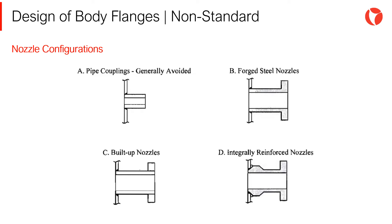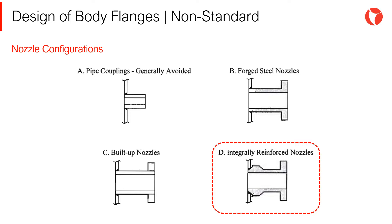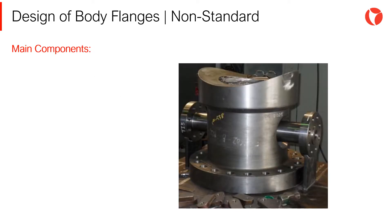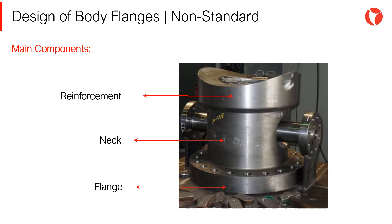There are different nozzle configurations for pressure vessels, accounting for different service requirements and design conditions. Often, non-standard flanges using nozzles follow the integral reinforced configuration as shown in the picture. In other words, an integral flange is formed by the flange, the neck, and the reinforcement. In this case, the flange is a component of an integral piece.